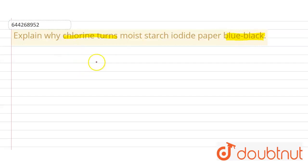First of all, chlorine's reaction with potassium iodide. Starch iodide paper is a solution of starch mixed with potassium iodide. So iodine ion is converted into I2 and it converts into KCl.